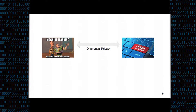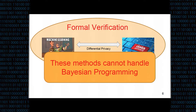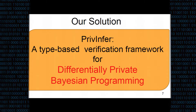We all know there are solutions for these problems. One of these is, of course, differential privacy. The intersection between these two areas has played the role of a very nice playground for the formal verification community, which has provided tools such as logics, type systems, or programming languages specifically for the verification of differential privacy, so that people can be assured that their programs are indeed differentially private. But there is a problem: all the solutions provided so far don't handle Bayesian programming. So we propose PRE-INFER, which is a type-based verification framework for differentially private Bayesian programming.